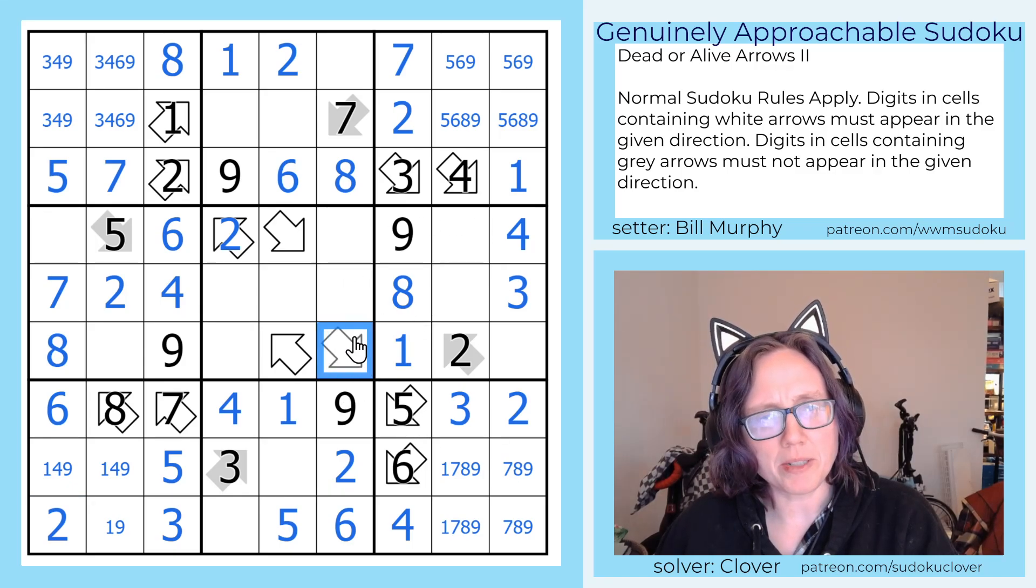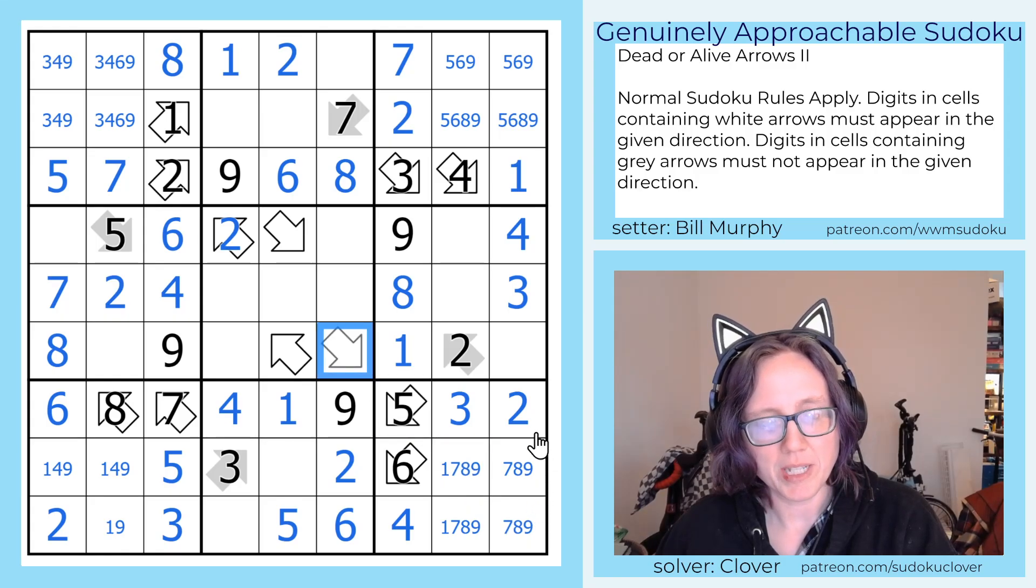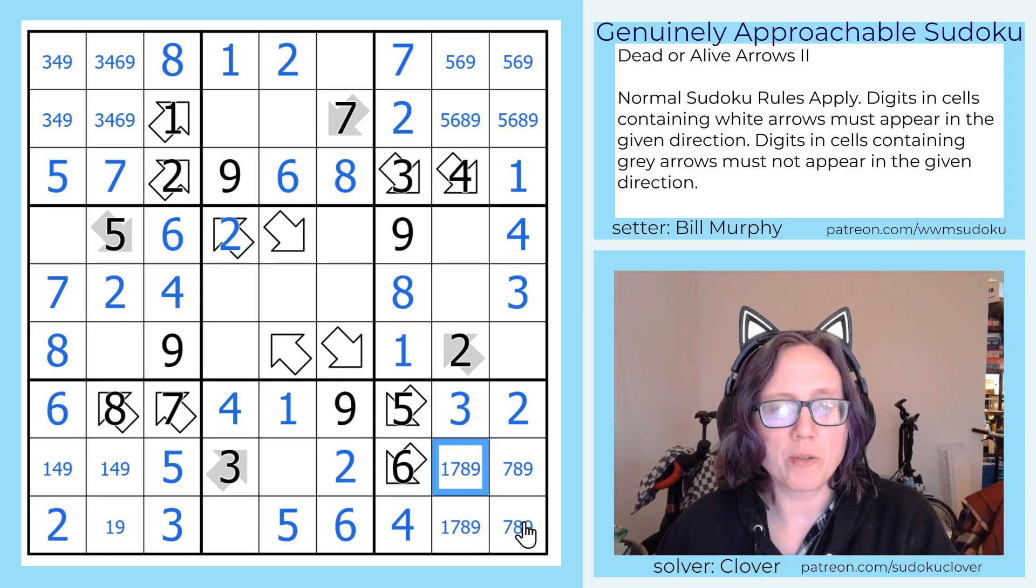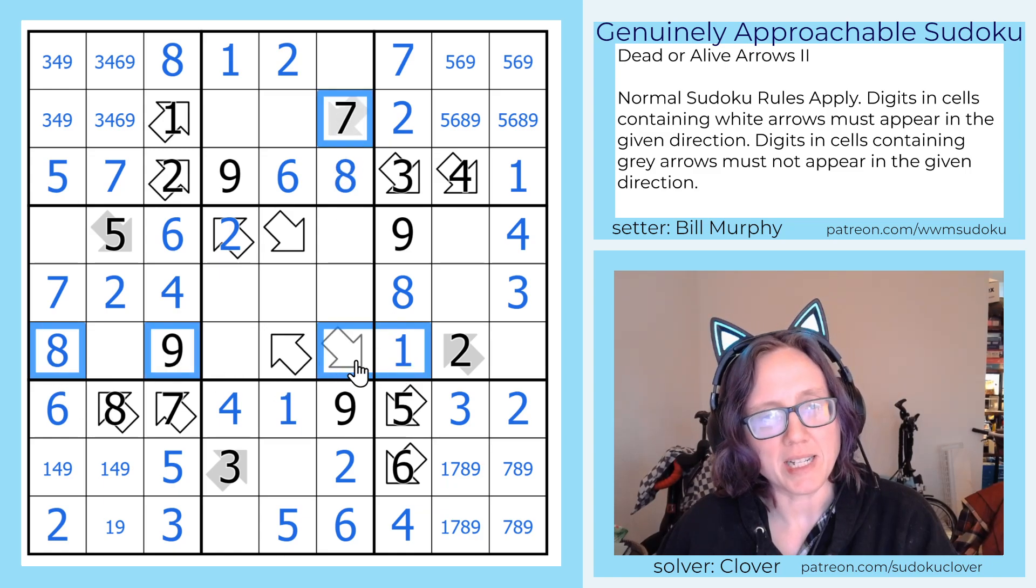Now let's do something similar here. So this arrow is looking down into this corner. It is a 5 or it's a 1, 7, 8, or 9 if it's pointing at one of those two, but it already sees 1, 7, 8, and 9. So it must be a 5.